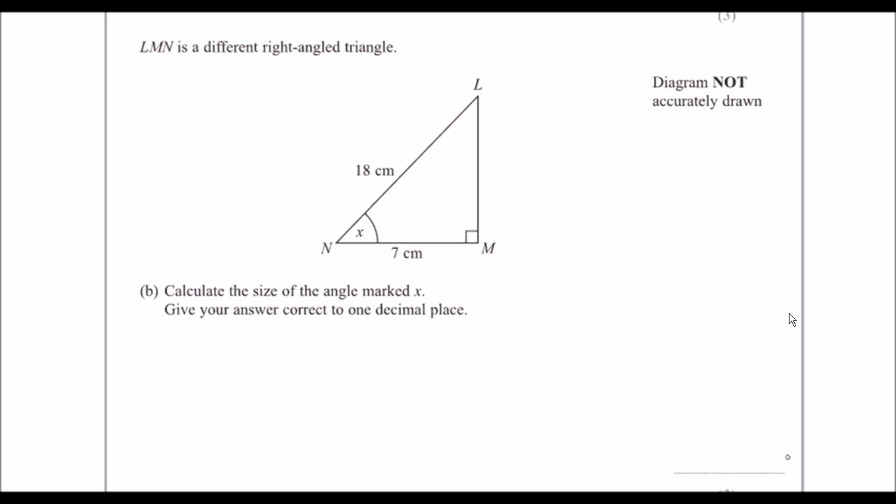Okay, different right angle triangle, straight away you can see an angle, so this is the SOHCAHTOA question. So let's label the triangle, we've got the hypotenuse here, the opposite here, the adjacent here.